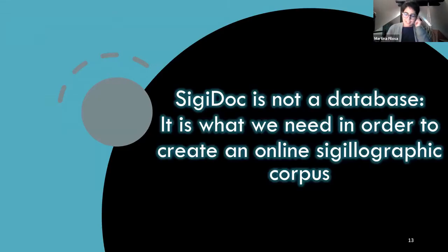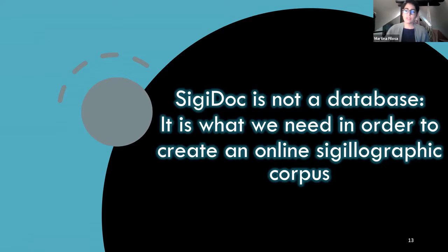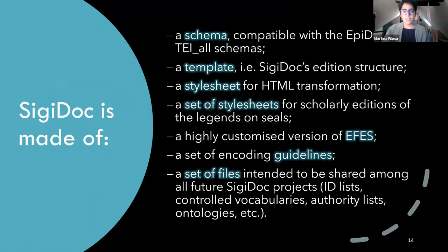Everyone with whom we talk about SigiDoc says, "Cool, you're doing a seal database." No, we're not doing a seal database — we are developing an encoding standard. It is what we need in order to create an online sigillographic corpus, and it is what allows us to have interoperability and to link our data to the rest of the world.